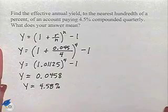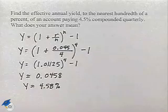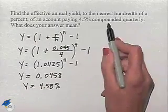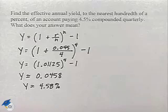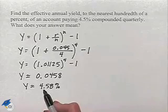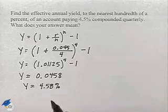Now what does the answer mean? Well the money invested at 4.5% compounded quarterly, as we were given, earns the same amount of interest in one year as money invested at 4.58% simple interest.